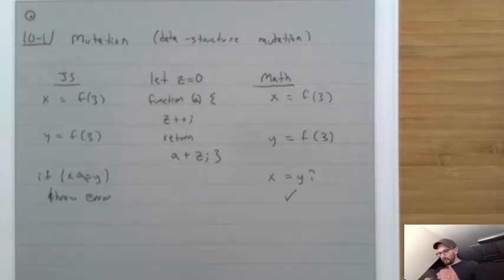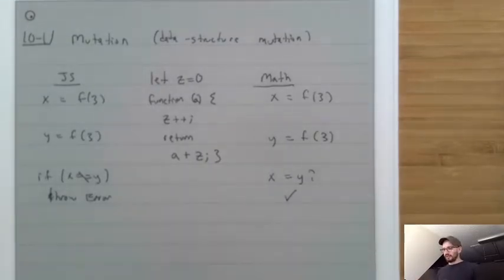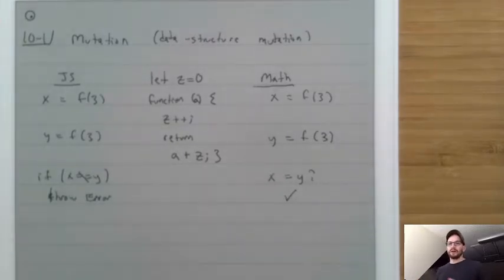At this point we really want to deviate from math, because in math it's not possible to do things like this, so we have to have some other way of doing it.